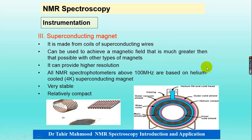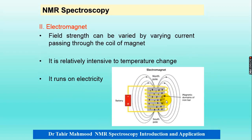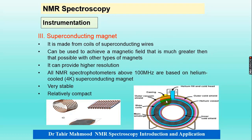The third type is the superconducting magnet, which is mostly used in all types of NMR spectrometers. It is made of coils of superconducting wires as shown in the diagram, and can achieve a magnetic field much greater than other types. It provides higher resolution. All NMR spectrometers above 100 MHz are based on helium-cooled superconducting magnets. It is very stable and relatively compact.